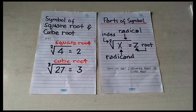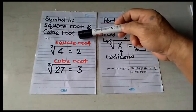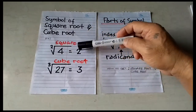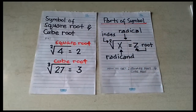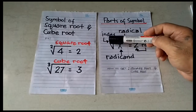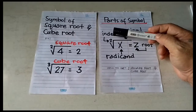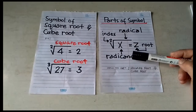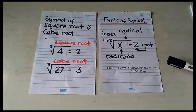Hello guys, for today's video I am going to discuss basic square roots — we have perfect squares and perfect cubes. The symbol of square root and cube root: square root of 4 is equal to 2, cube root of 27 is equal to 3. The parts of the symbol are: the radical symbol, the index (exponent), X is the radicand, and C is the root.